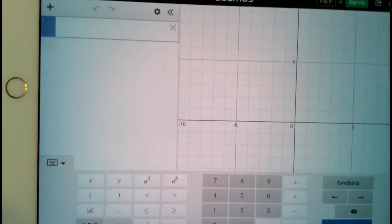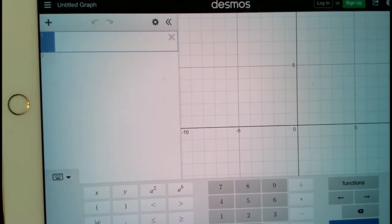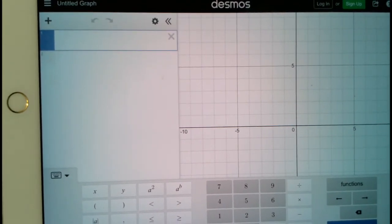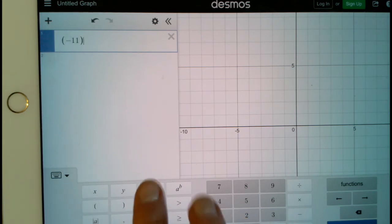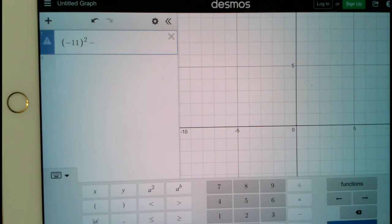I paused the video to bring up Desmos, but here's Desmos, and again what I'm going to type in, I'm not going to type in the square root. I'm going to type in negative 11 squared, minus 4 times negative 2, times 3. And we get 145,